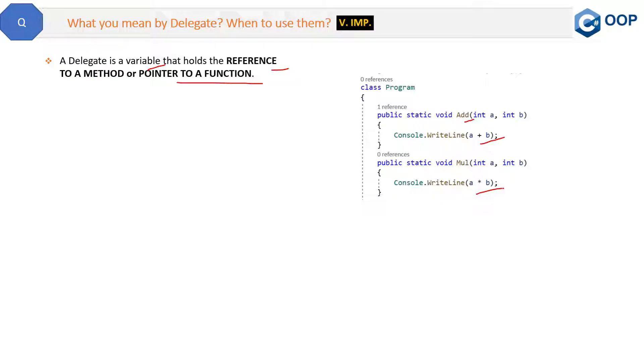Now if you notice the parameters, there are two parameters and the type of parameters are both the same in both these methods. And the return type is also the same.